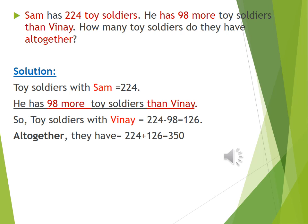We have highlighted all the information given here. Toy soldiers with Sam is equal to 224. He has 98 more toy soldiers than Vinay. So toy soldiers with Vinay is equal to 224 minus 98 equals 126. All together they have 224 plus 126 equal to 350.